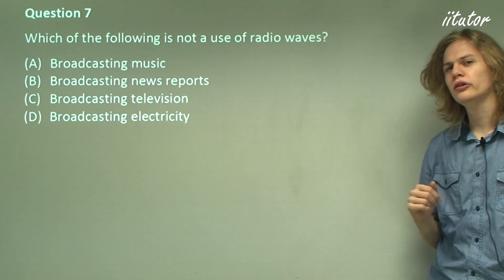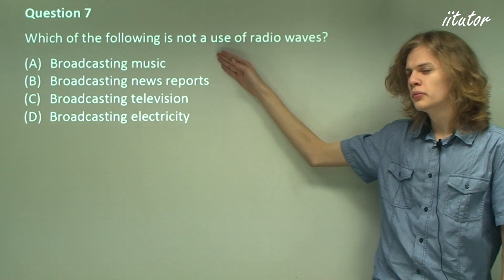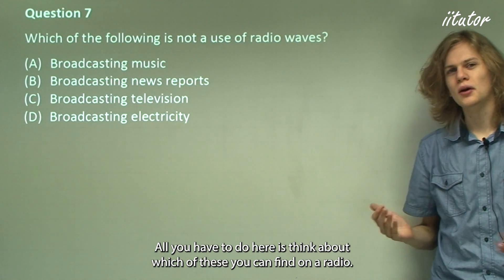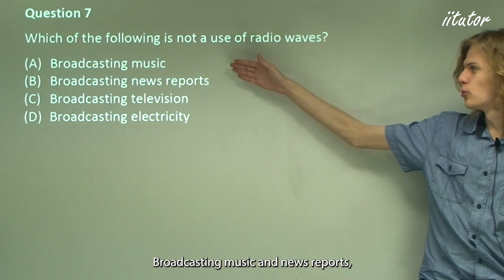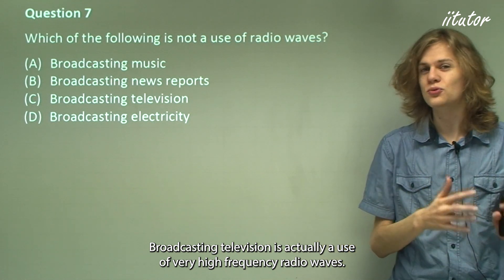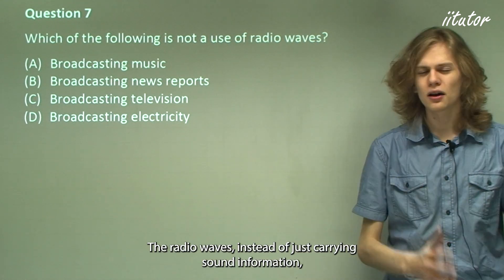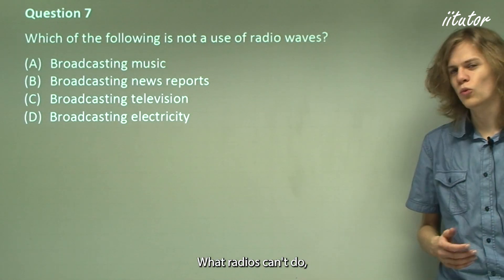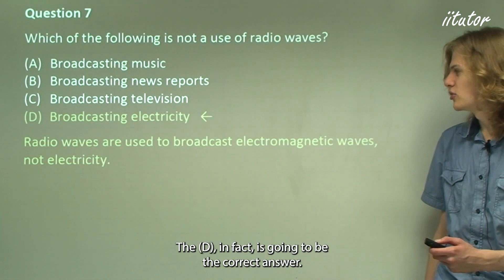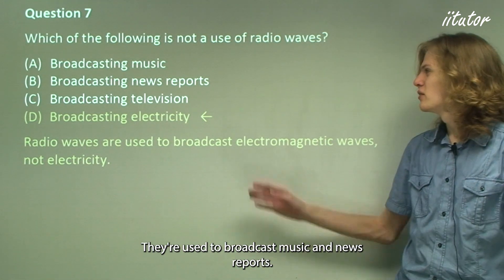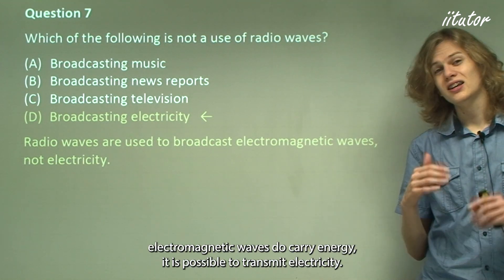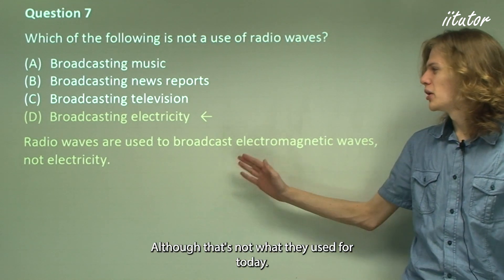Question 7: Which of the following is not a use of radio waves — broadcasting music, news reports, television, or electricity? Broadcasting music and news reports happen all the time on radio. Broadcasting television uses very high frequency radio waves carrying both sound and picture information. However, radios cannot generate electricity from radio waves, so the answer is D: radio waves are not used to broadcast electricity. Though electromagnetic waves do carry energy, transmitting electricity is not their current use.